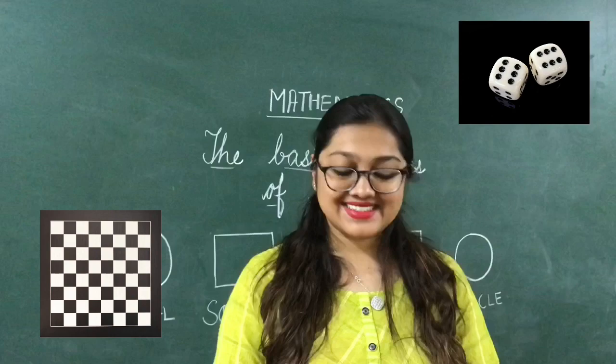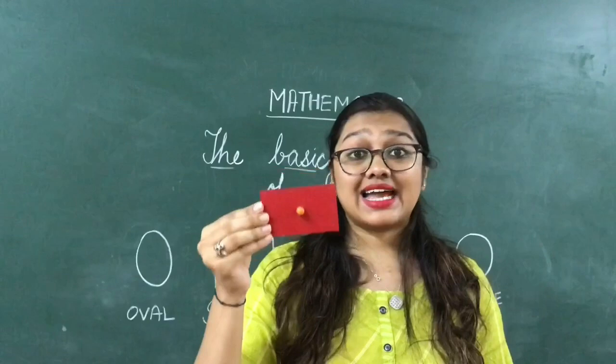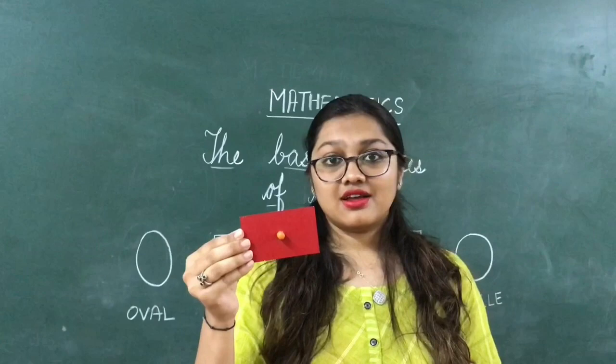Which is this shape? Rectangle. Let us discuss some examples of rectangle: wall, table, paper. Understood? Very good.